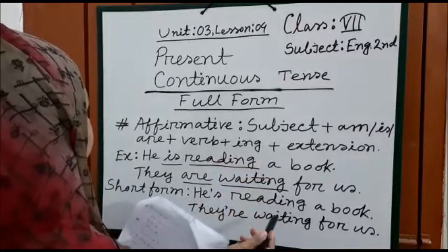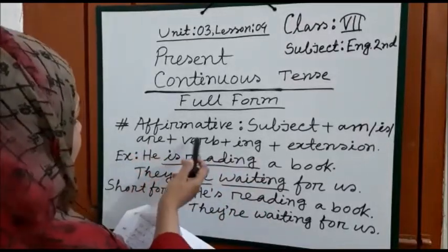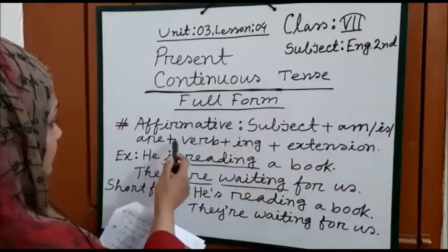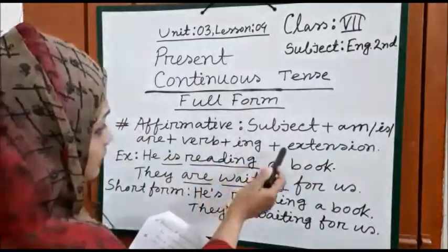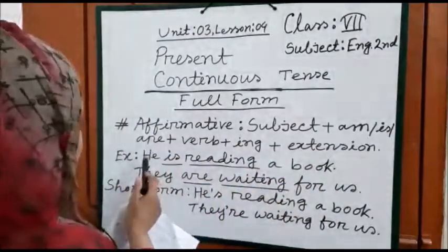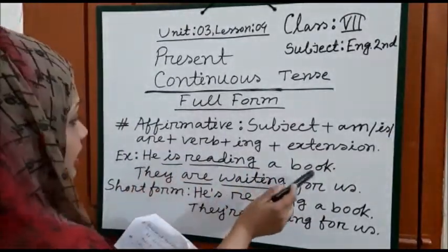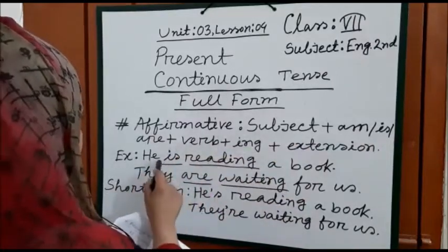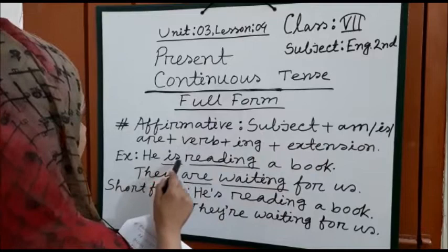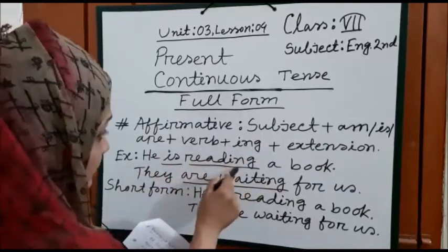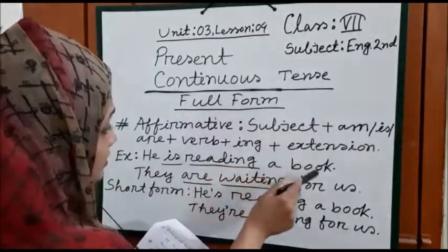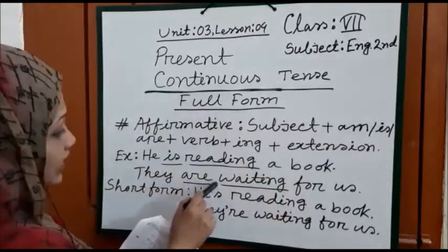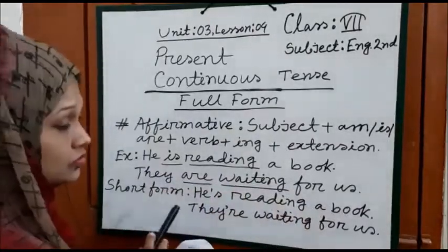Now I am going to show you the full form of present continuous tense. In an affirmative sentence the structure will be: Subject + am/is/are + verb + ing + extension. For example: He is reading a book — the subject is 'he', we used 'is' according to person, added 'ing' with 'read', and 'a book' is the object. Another example: They are waiting for us.